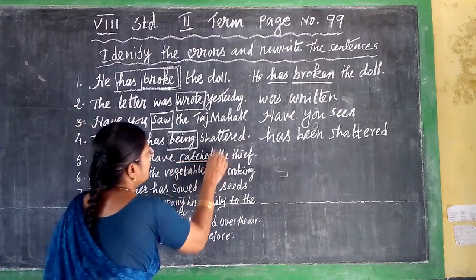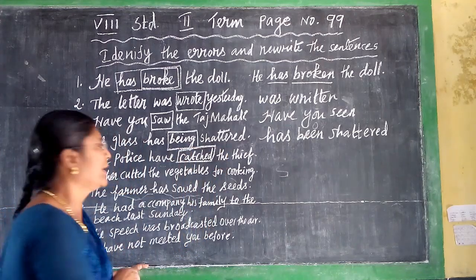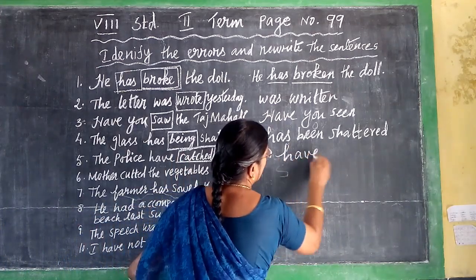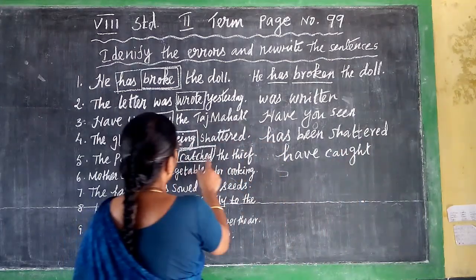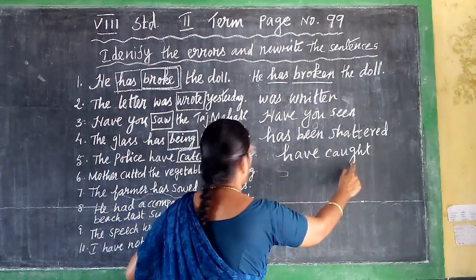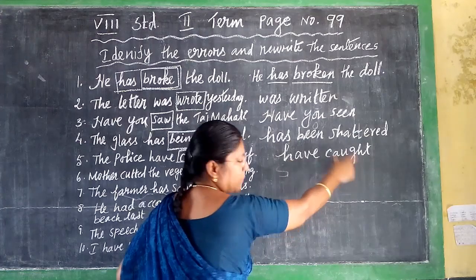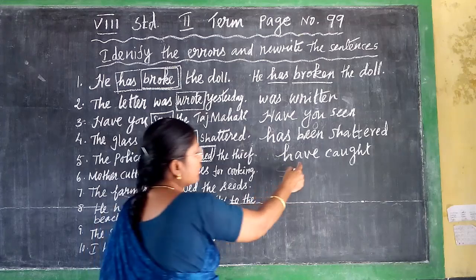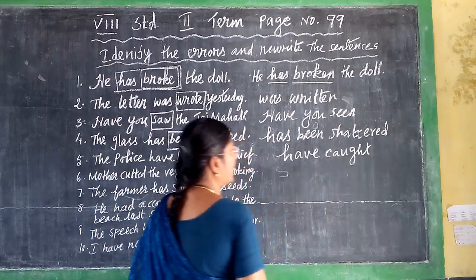Next: 'The police have caught the thief.' The verb 'caught' — catch, caught, caught — is already the 3rd form of the verb. Have or has is followed by only the 3rd form of the verb. Since 'police' is plural, we use 'have.' So the correct answer is: 'The police have caught the thief.'